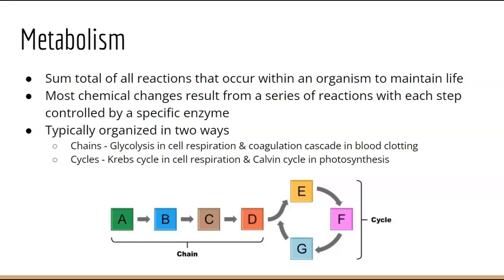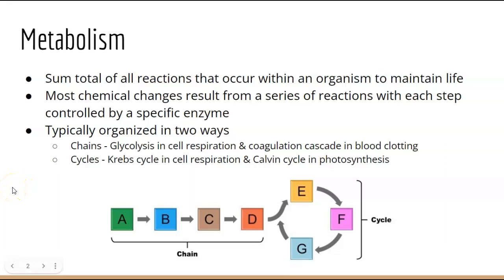You can have a chain, or you can have a cycle. A cycle is something that is repeated over and over again, like what you see in E, F, G. The products of D will go into the cycle and it will just continuously perform its role in a circle. An example of this is the Krebs cycle in cellular respiration and the Calvin cycle in photosynthesis. We will learn about both of those in detail in the upcoming set of notes.